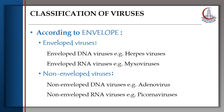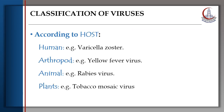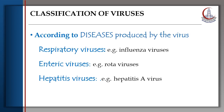Viruses are classified according to the envelope into enveloped viruses and non-enveloped viruses, and also classified according to the genome into DNA viruses and RNA viruses. According to the host, they are classified into human, arthropod, animal, and plant viruses. According to the diseases produced, they are classified into respiratory viruses, enteric viruses, and hepatitis viruses.